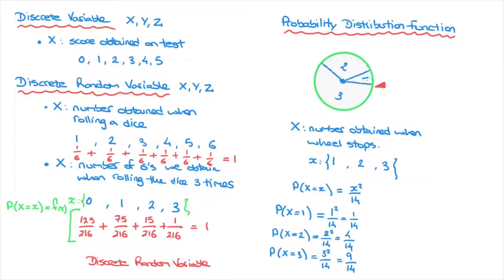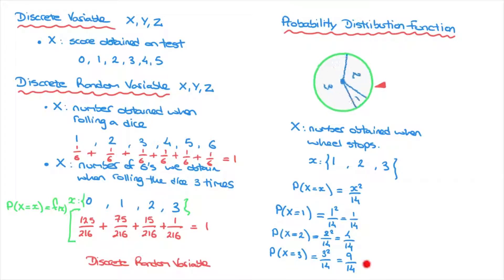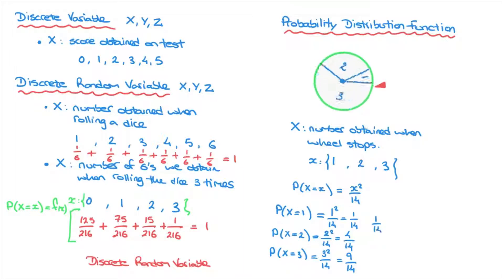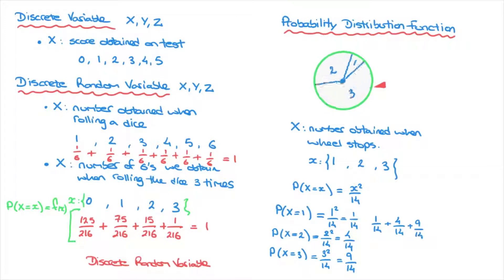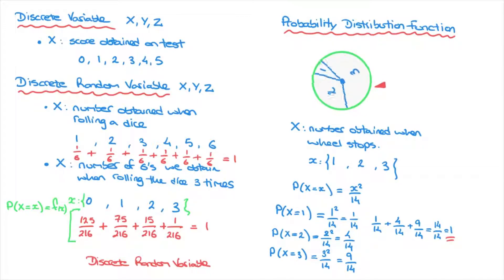We'll also use probability distribution functions to check that a discrete variable is indeed random. To check this, we add up all the probabilities: 1/14 + 4/14 + 9/14 equals 14/14, which equals 1. Since the sum equals 1, this confirms that this discrete variable is indeed a discrete random variable.